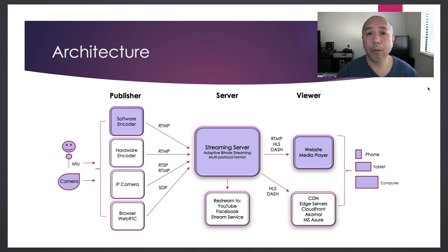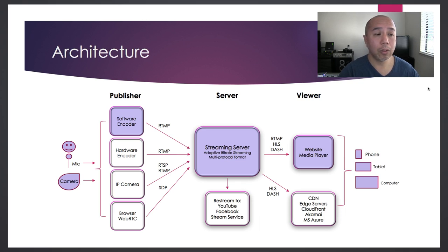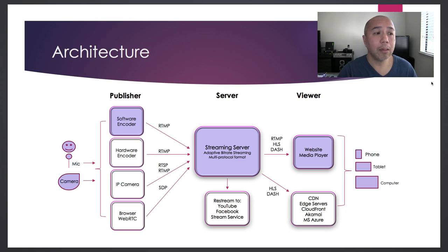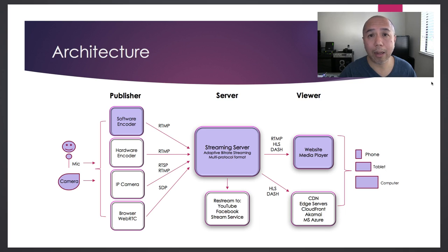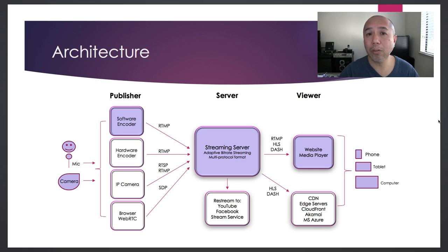The future of live streaming depends on MPEG-DASH, a standard created by a group of companies that plays on virtually every device except Safari, iOS, and the Opera browser. If you want to play on all devices, I recommend using HLS, and if you want low latency on desktops you can use RTMP with a player like JW Player. That's essentially the architecture — publishing side, server side, and viewing side. Post any questions in the comments, and don't forget to follow, subscribe, and visit our website. Thanks for watching!